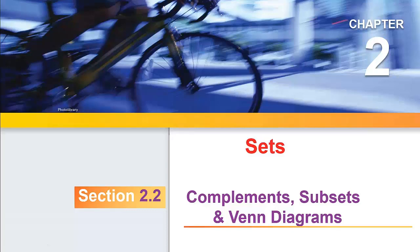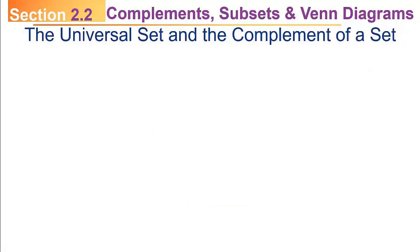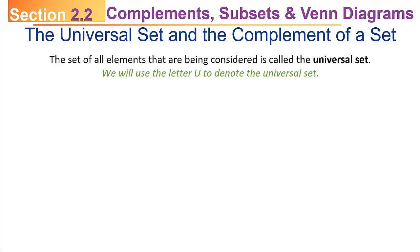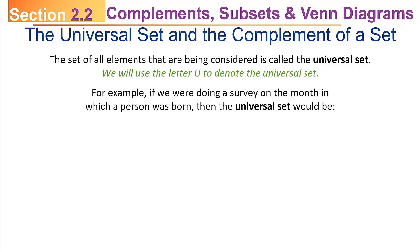Today, as we continue our study of sets, let's talk about complement subsets and Venn diagrams. I want to begin by talking about something called the universal set and its complement. The set of all elements that are being considered is called the universal set. We'll use the letter capital U to denote the universal set.